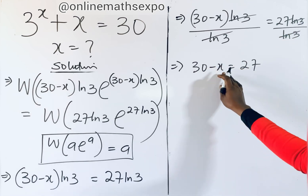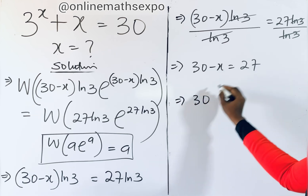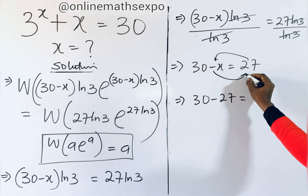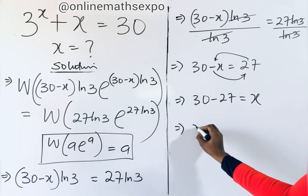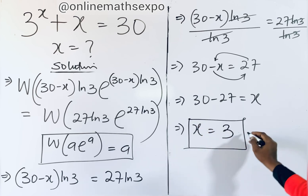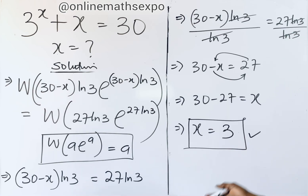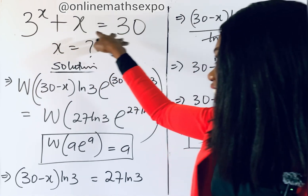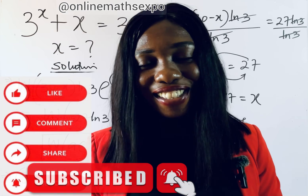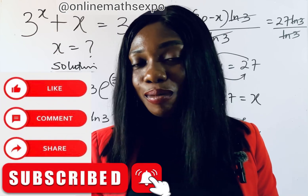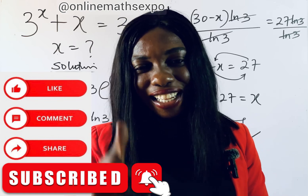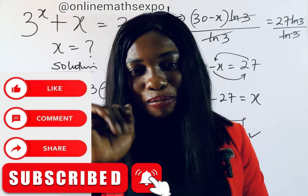So to get our x, we rearrange: x is equal to 30 minus 27, which gives us x equals 3. You see that this corresponds to what we stated at the beginning of this tutorial — our x is 3, and when you plug it back in, it gives us 30. I hope you learned something new today. Don't forget to subscribe, click the notification bell, share this so that others will learn, and give this a thumbs up. Thank you for always engaging. I love you all, bye-bye.